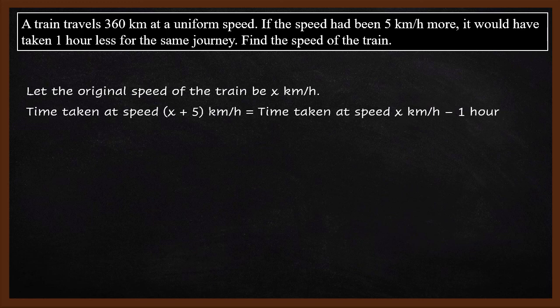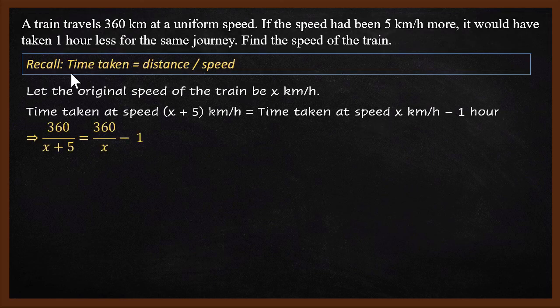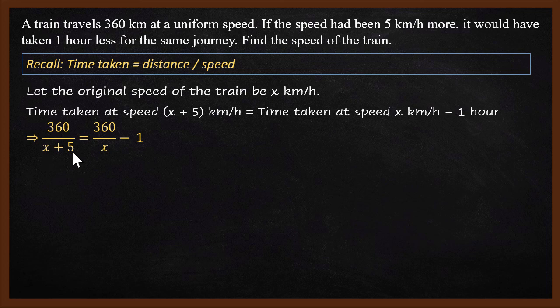How do you write it as a quadratic equation? The main thing to remember is how do you get time if you know the distance and the speed. Time equals distance divided by speed. If the speed was x+5, the time is 360 divided by (x+5).